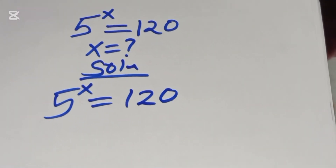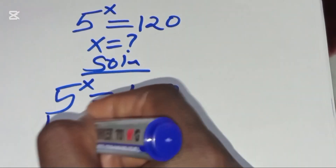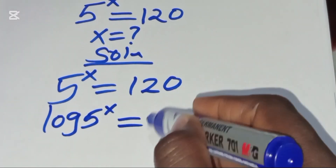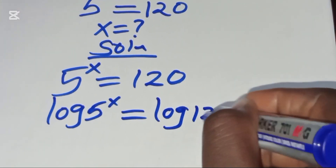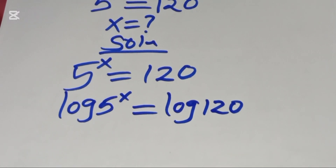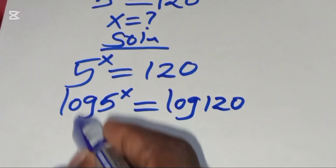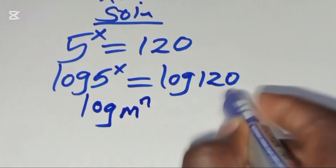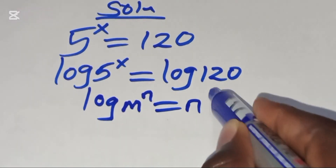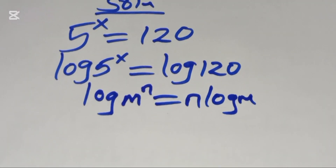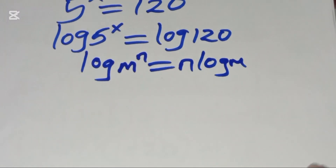To solve for x, we introduce the natural logarithm on both sides, giving us log(5^x) = log(120). Now, log(5^x) is in the form of log(m^n), which can be expressed as n·log(m).